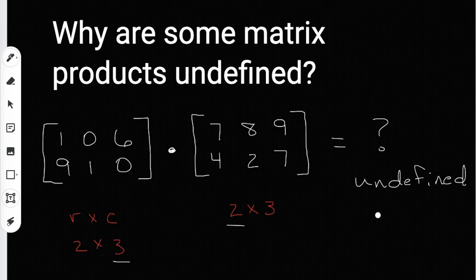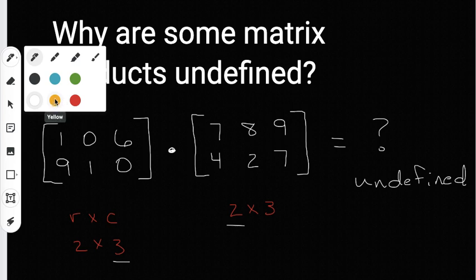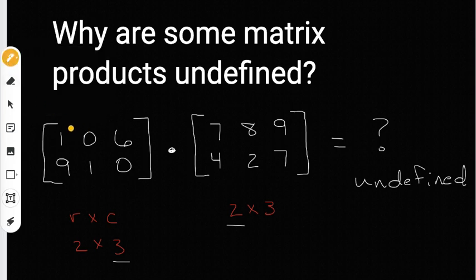But much more than that, I want to explain why it's undefined. Typically, when we multiply matrices, we go row by column. The first thing I do when I start multiplying is I circle the first row. Then on the next matrix, I circle the first column. So I'm going to circle this seven and this four - that's the first column.